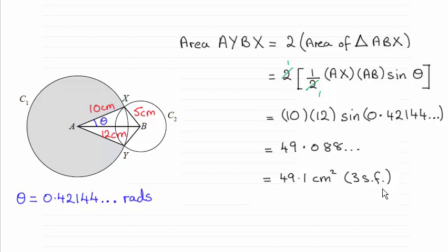Now as you can see, the method that I used was to take the area of triangle ABX and double it. So I was able to work out the area of triangle ABX because I had two sides, the 12 and the 10, and the included angle theta, which we worked out in the first part of the question.